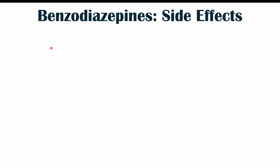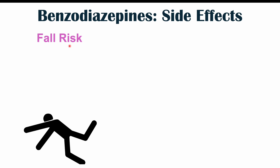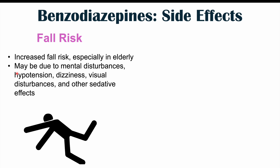A very important long-term consequence of benzodiazepine use, especially in older patients, is increased fall risk. Mental disturbances, hypotension, dizziness, visual disturbances, and sedation can all contribute to falls. When elderly patients fall, they can experience fall-related sequelae such as a broken hip, leading to long-term hospital stays and even mortality. This is another reason why it is important to taper or eliminate the medication in elderly patients.